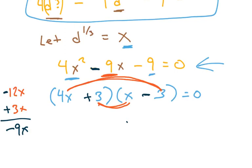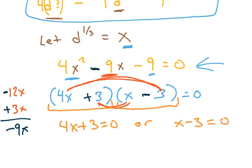And so from here, we can use the fact that anything times 0 is 0. So if this times this gives me 0, it either is such that the first part is equal to 0, so 4x plus 3 equals 0, or the second part, x minus 3 equals 0.